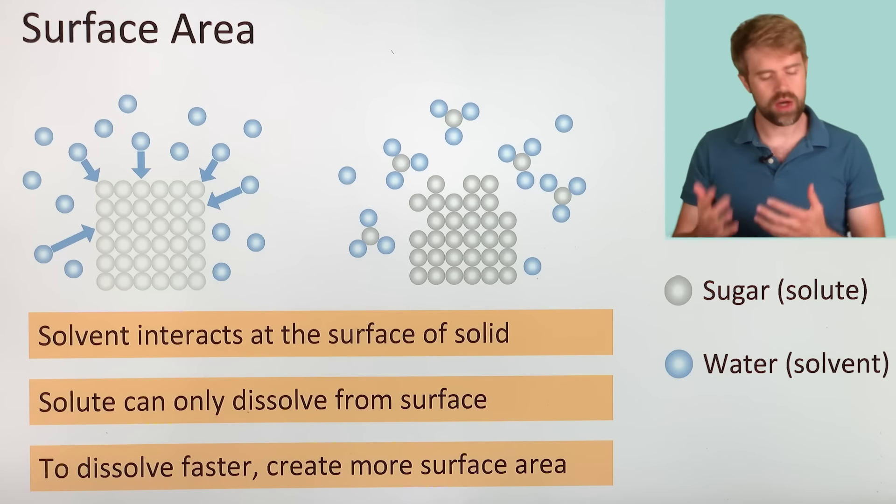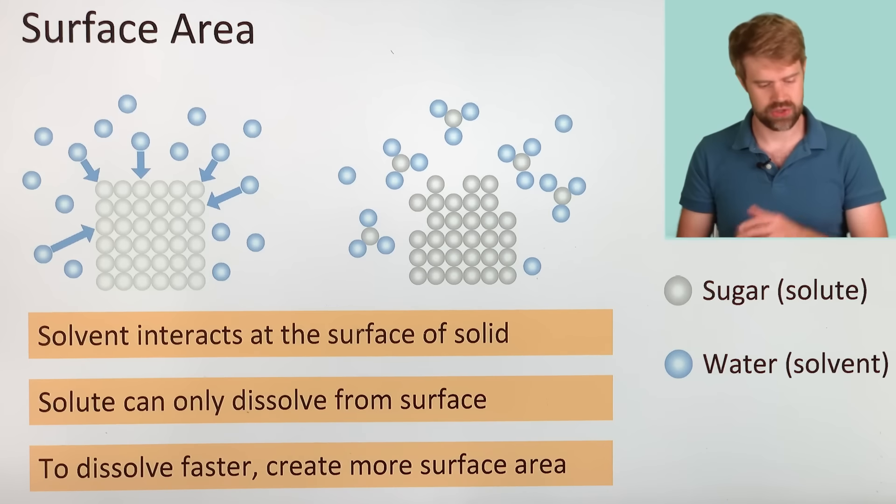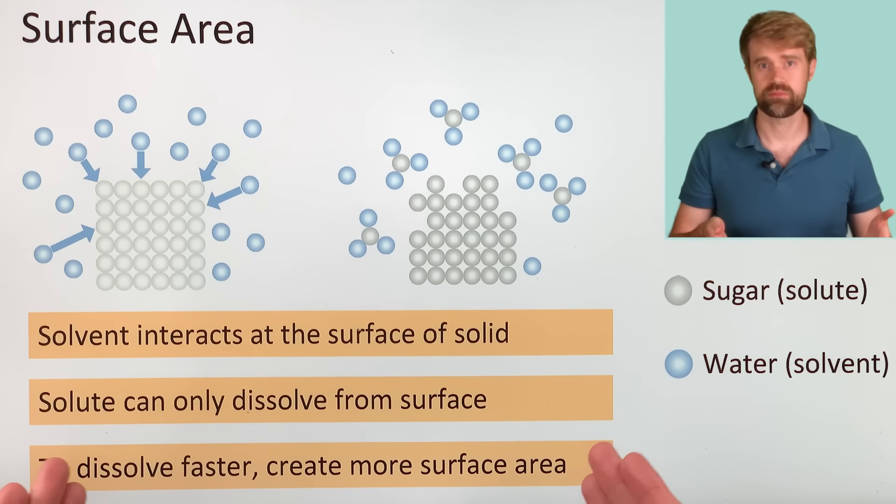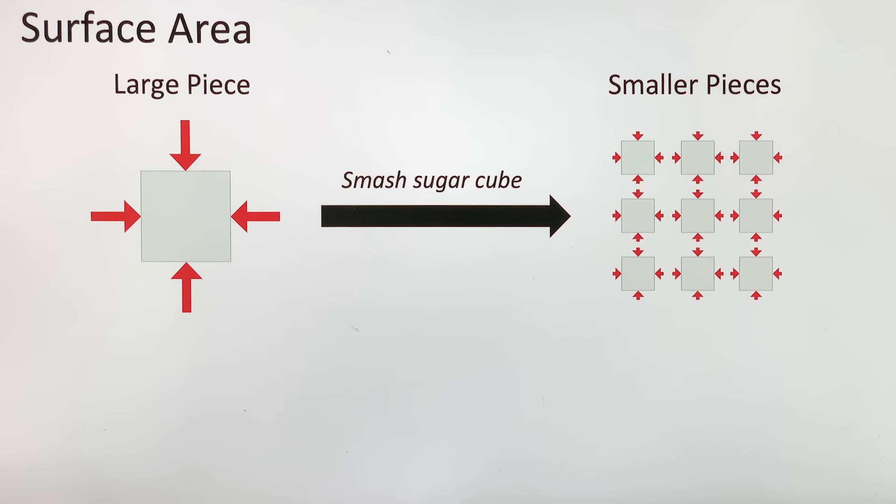So if you want something to dissolve faster, create more surface, or more surface area. So how would you do that? You'd make the pieces smaller.